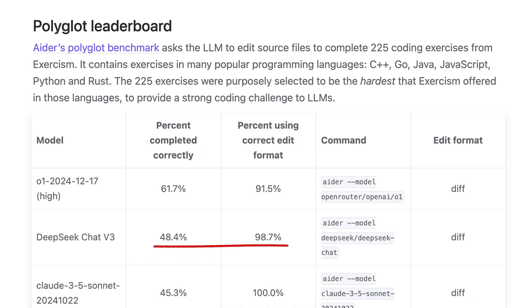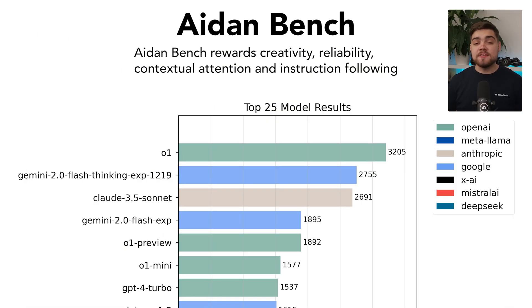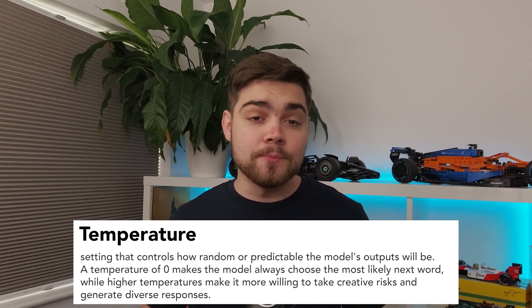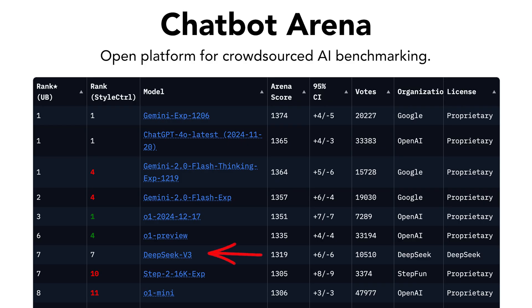Do their own benchmarks line up with the independent ones? Generally yes, but it does have some weaknesses. In the Ada Polyglot benchmark, which confirms its coding prowess and tests if LLMs are good at editing code, Deep Seek V3 ranks second — just behind O1, but surprisingly above Claude. Aden Bench is where Deep Seek V3 struggles though — it ranks 22nd. Aden Bench measures the ability to create diverse outputs while retaining coherence, and Deep Seek V3 is bad at this. Essentially, its temperature is too low. Finally, in Chatbot Arena, it ranks an impressive 7th, slotting itself in the middle of the best proprietary models, which is super impressive.